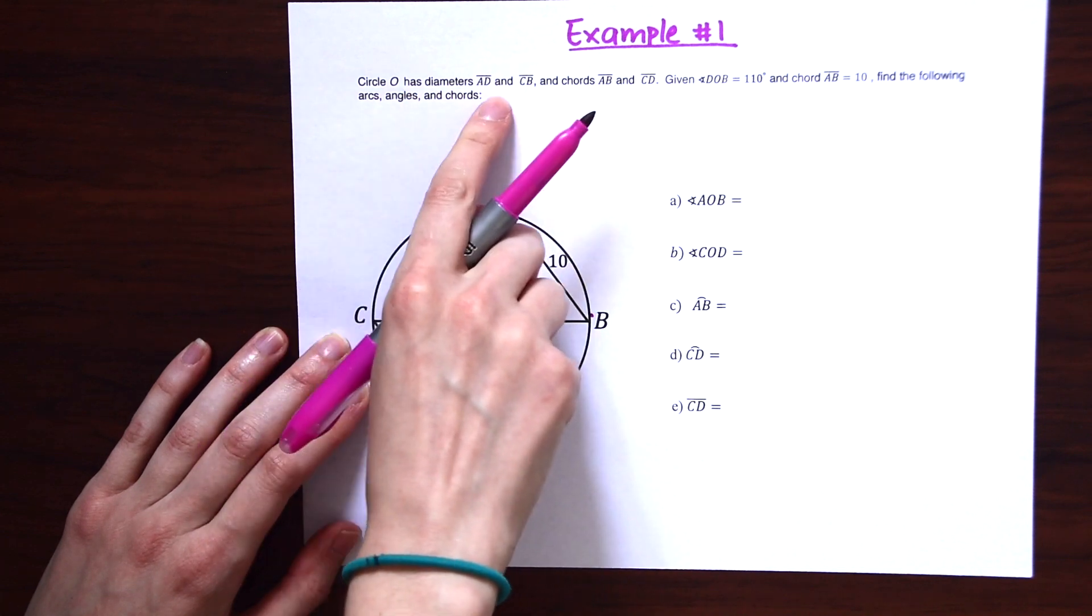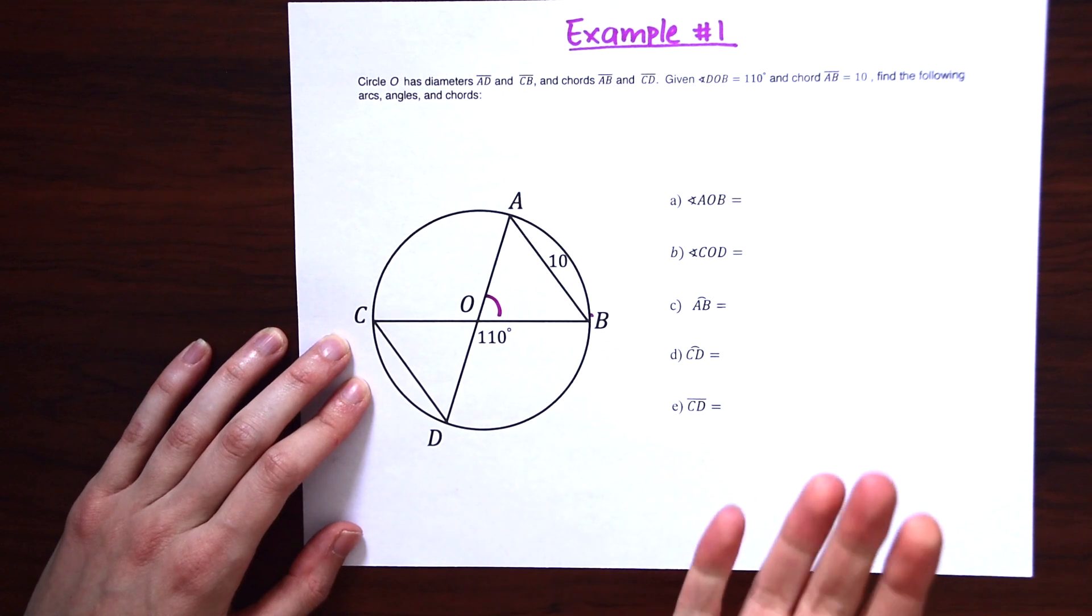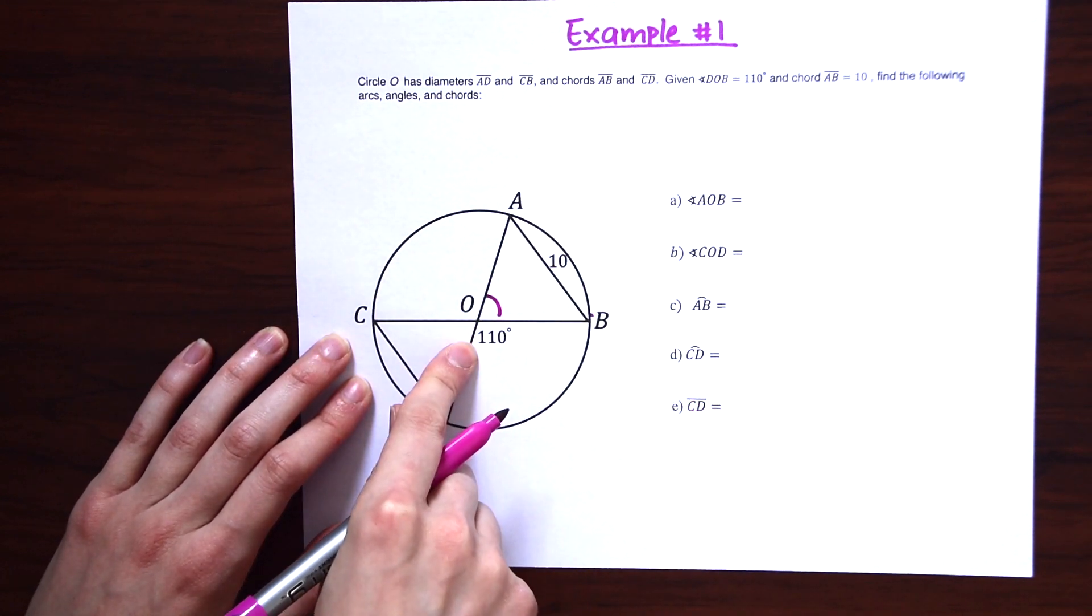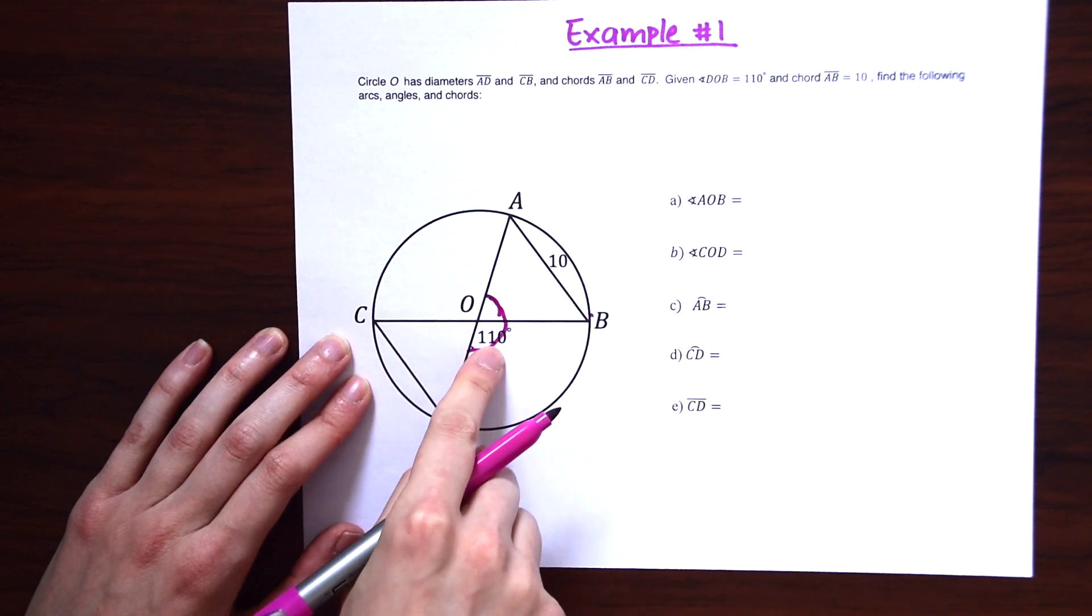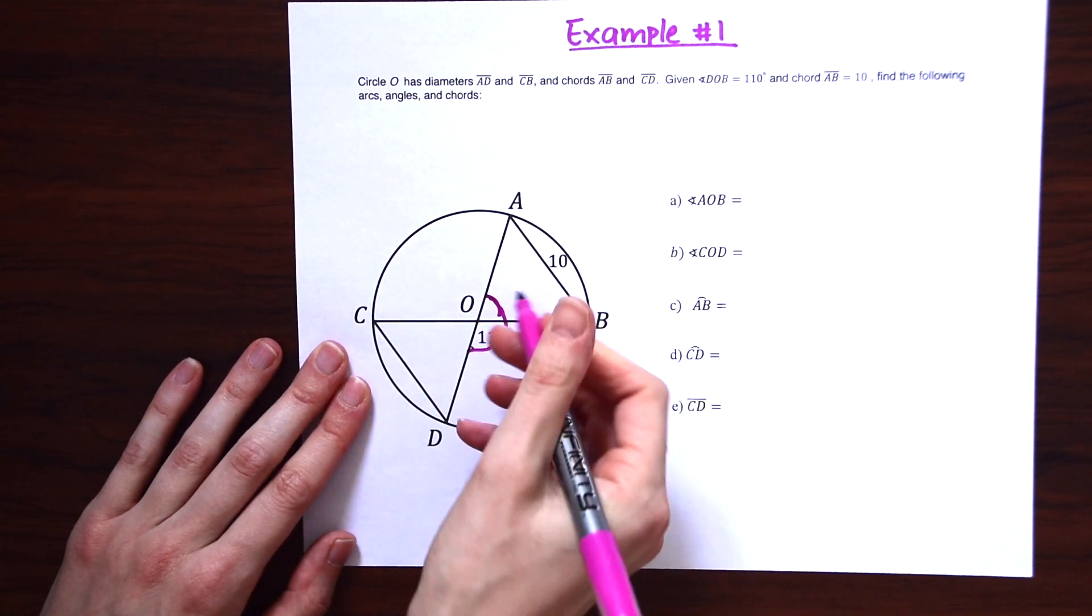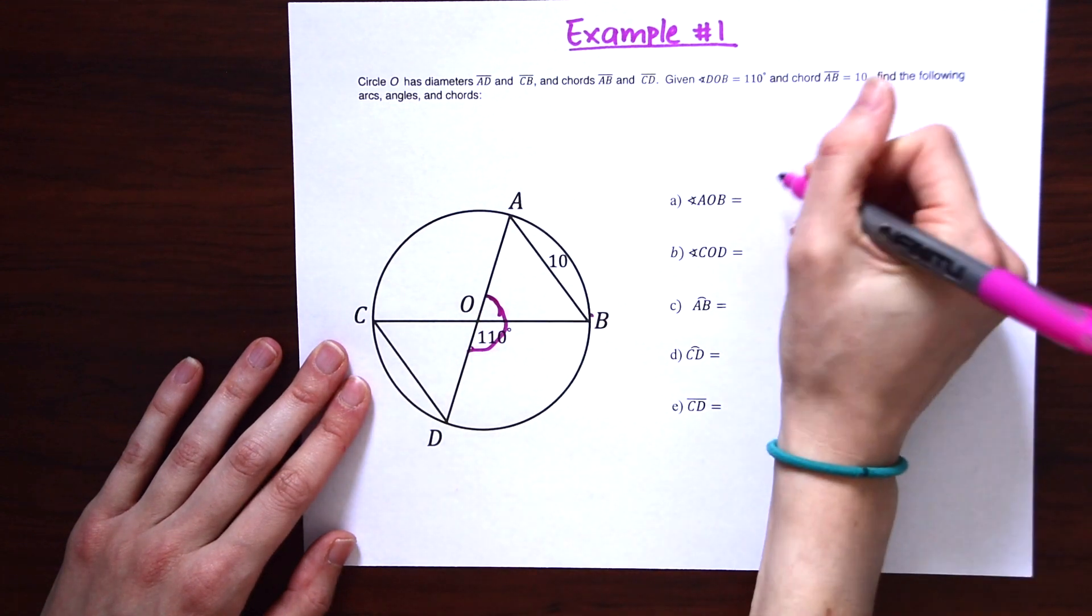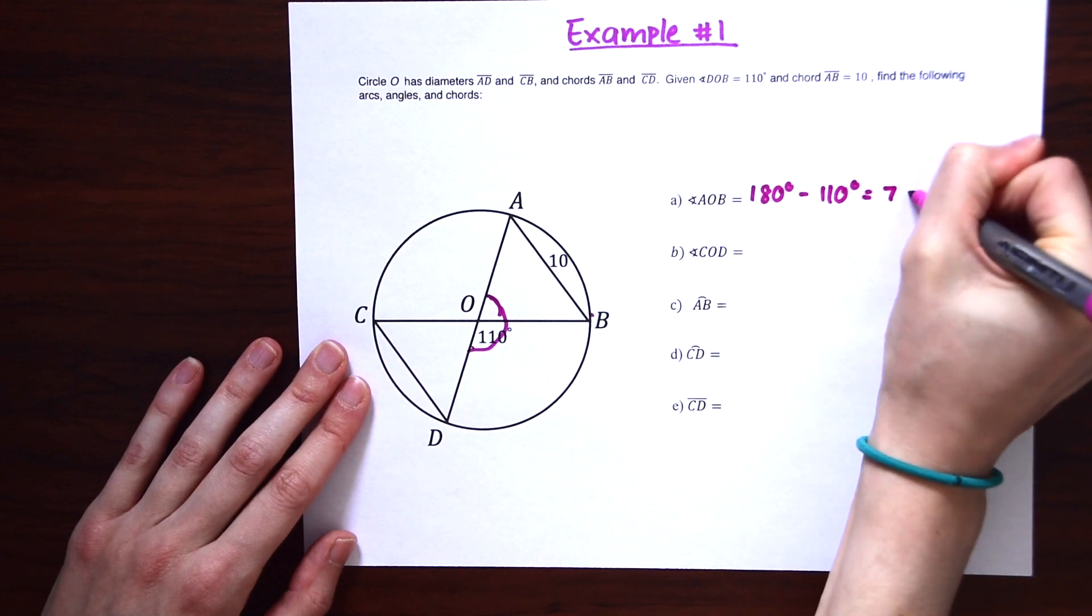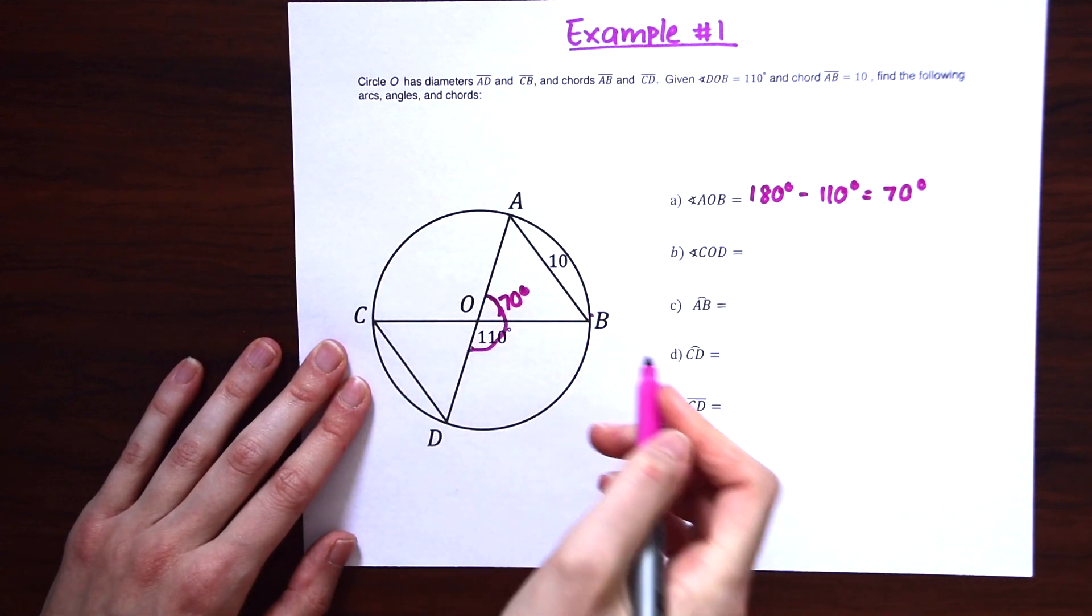So notice AD is a diameter. They gave that to us. So if AD is a diameter, that means it's a straight line that has a full value of 180 degrees. So if this entire thing is equal to 180 degrees, and we're only given 110, we know that whatever is here will have to be equal to something that allows this to add to 180. So to find that, we're just going to take 180 and subtract 110. And this will give us 70 degrees. So we know that angle AOB is equal to 70 degrees.